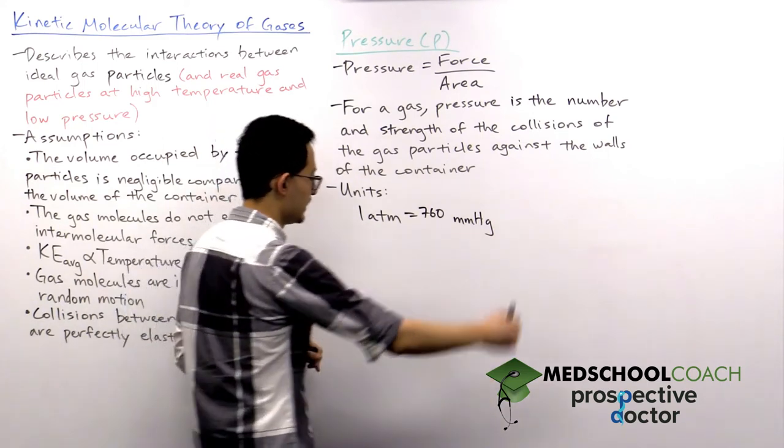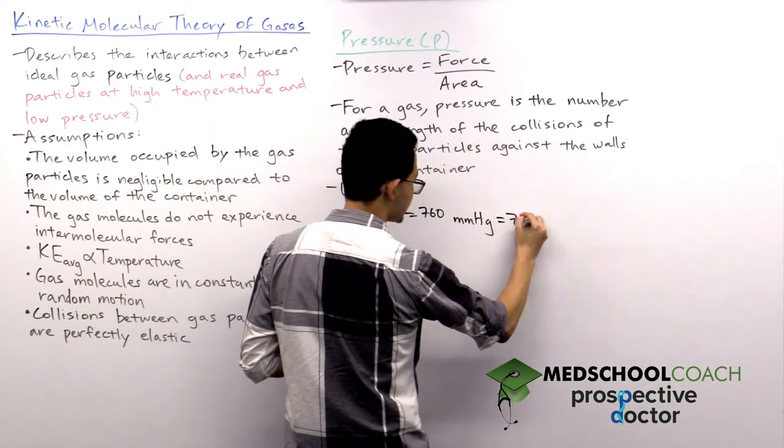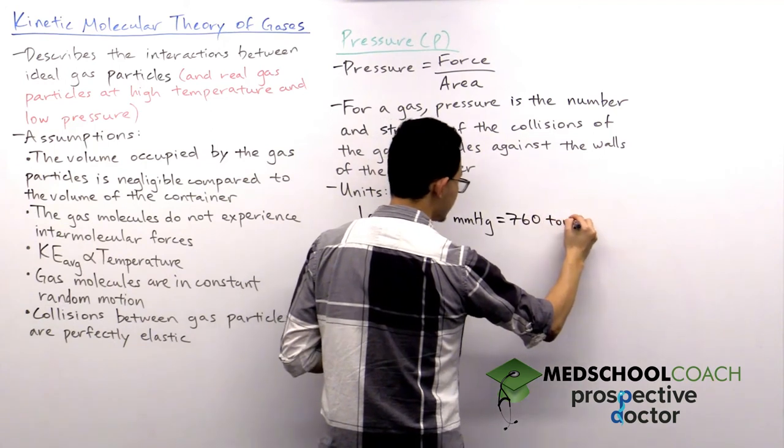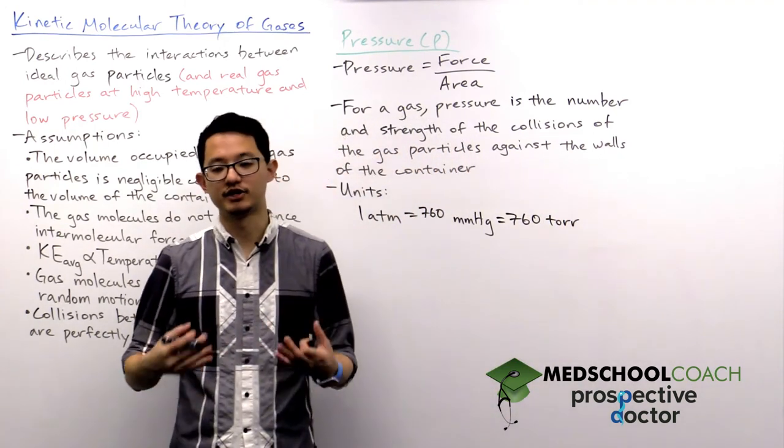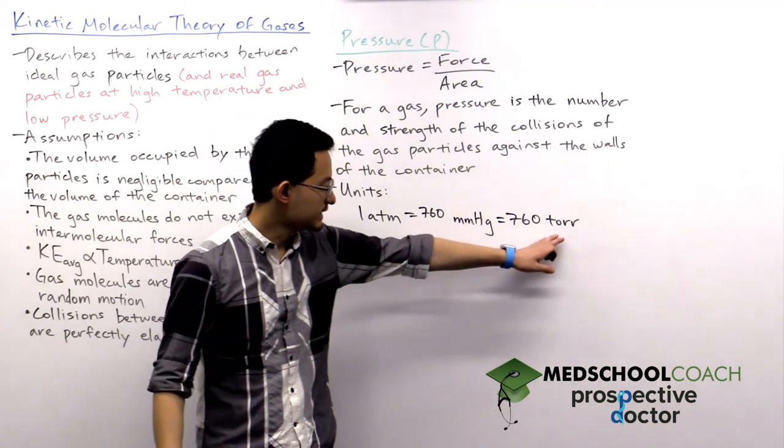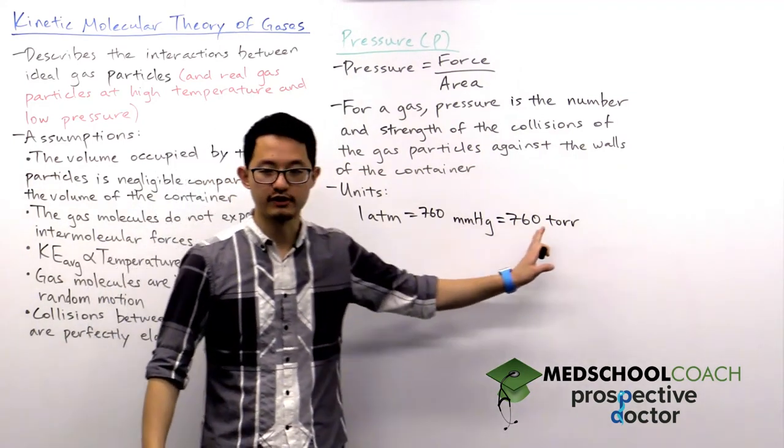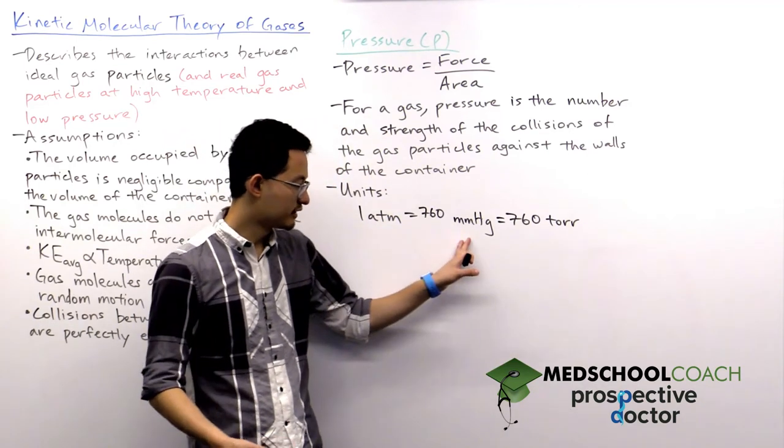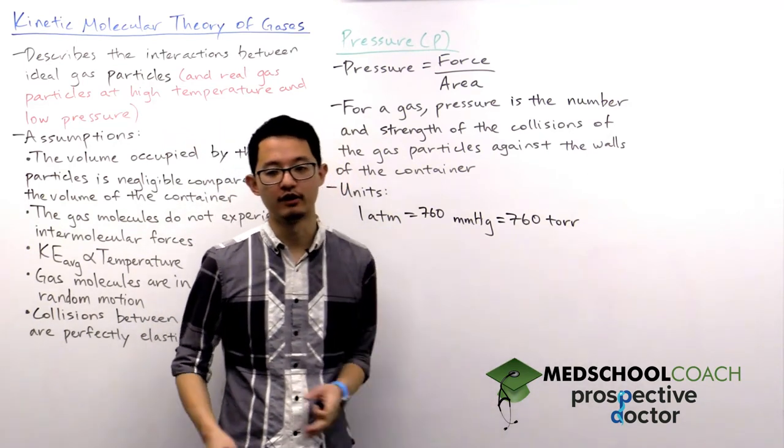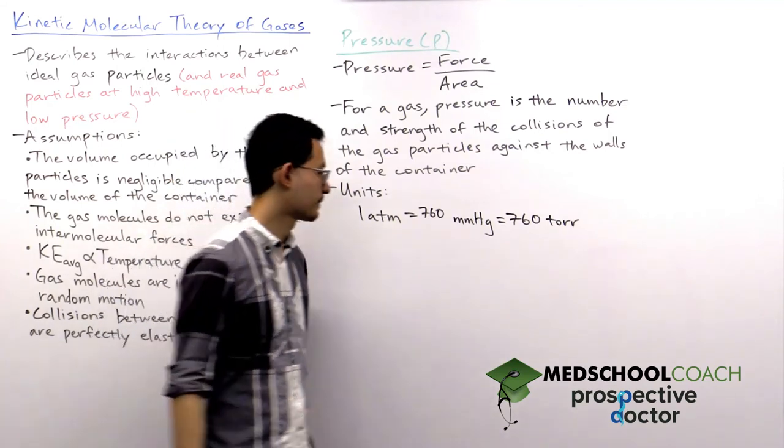Another unit that you need to know is the torr, which is essentially named after a scientist who did a lot of this research on the pressure of gases. So you can see here that one atmosphere is also equal to seven sixty torr, essentially telling you that millimeters of mercury and the torr are equivalent units.